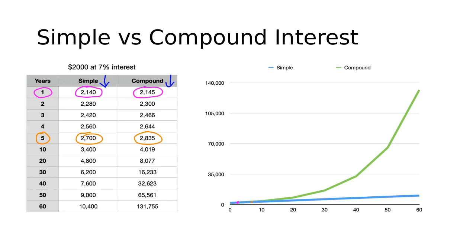And then if we jump ahead to the 30-year mark, we can see that the simple interest, the money in that account is now worth $6,200, but the money in the account that's using compound interest is worth $16,233.